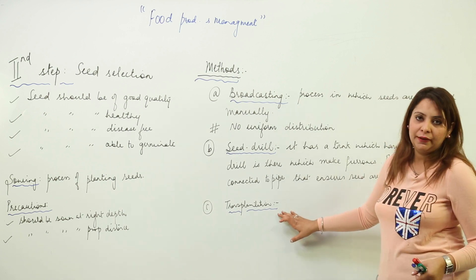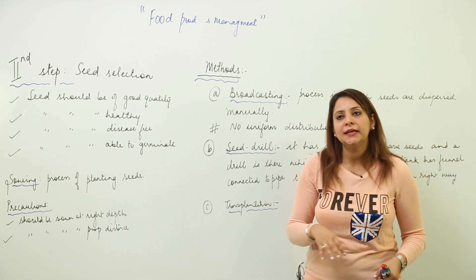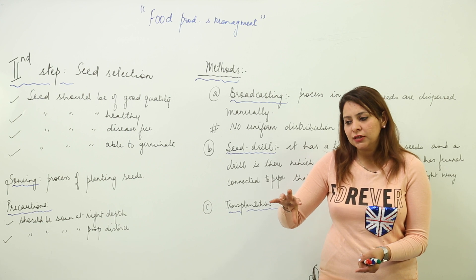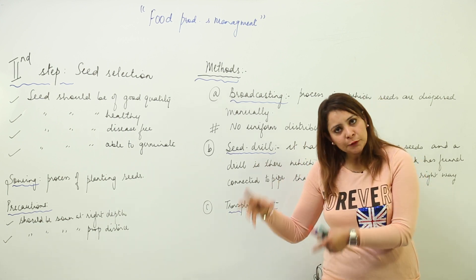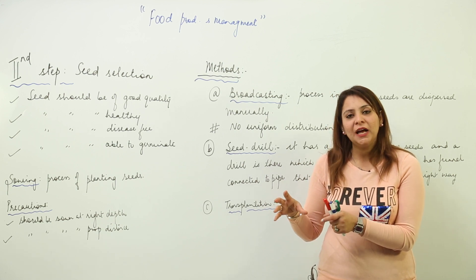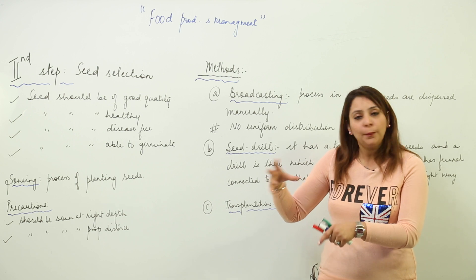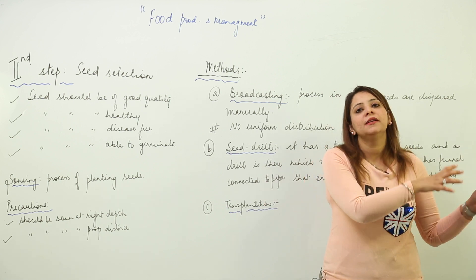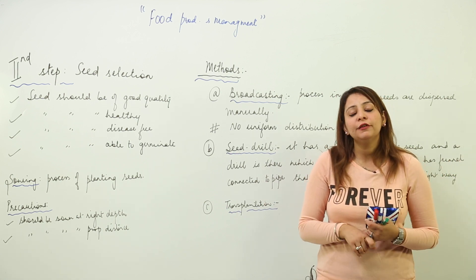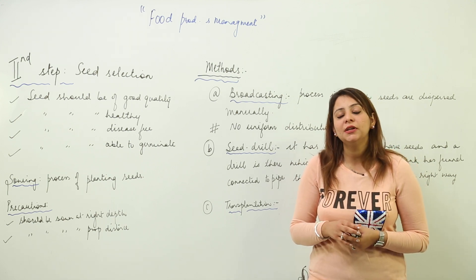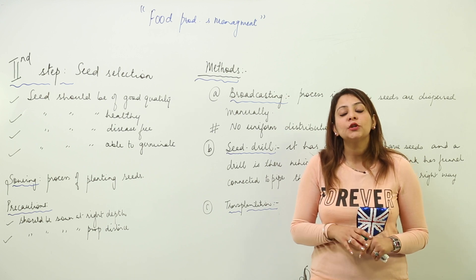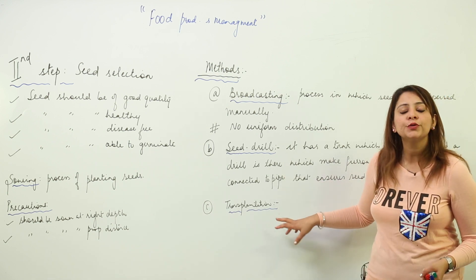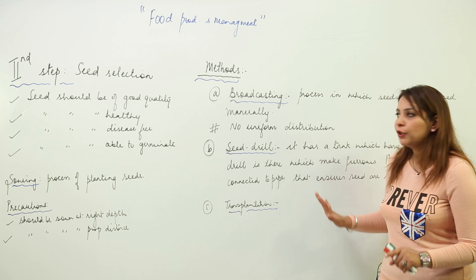The third method is transplantation. In transplantation, the farmer plants seeds in a pot first. When those seeds germinate and form small plantlets, the healthy plantlets with the proper characteristics are selected. Those selected plantlets are then taken out and planted in the main field. This way, the farmer can plant in a proper manner and also select only the healthy plantlets. Seed drill and transplantation are the commonly employed modern techniques.